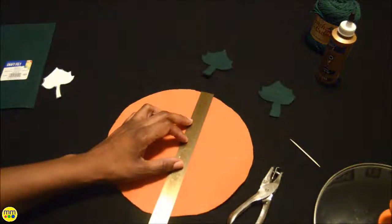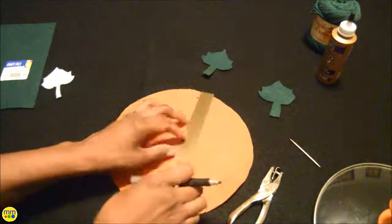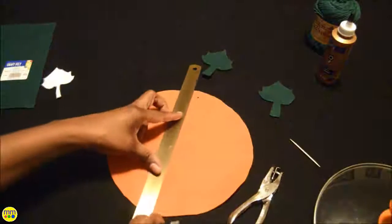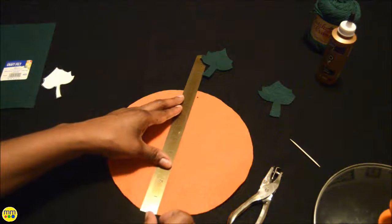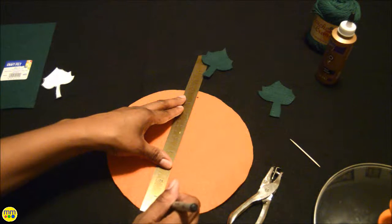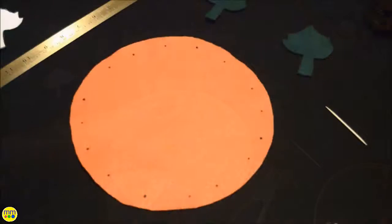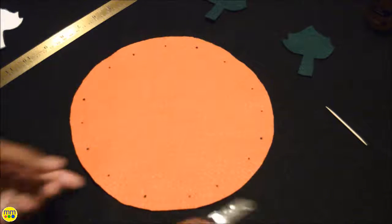Find the center of the pumpkin and make dots along the outer edge. Use your hole punch to create the holes.